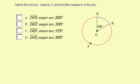And the name of the arc is arc DFE, or you could go EFD. The important thing is you need D and E to be the outside letters, and F has to go in the middle.